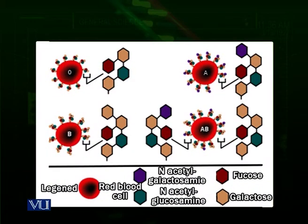Looking at a diagram, you can see there are four blood groups according to the ABO system: O, A, B, and AB. Two antigens are involved — antigen A and antigen B. Those people who have blood group O actually do not have any antigen, neither A nor B.